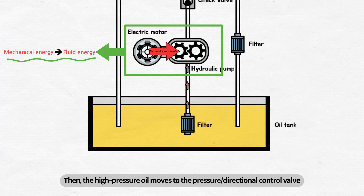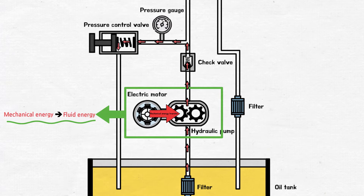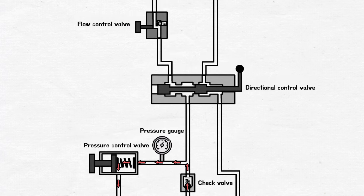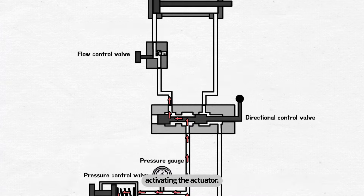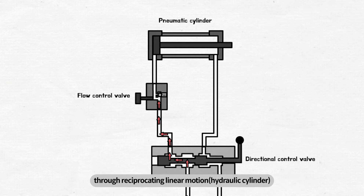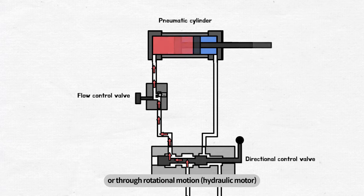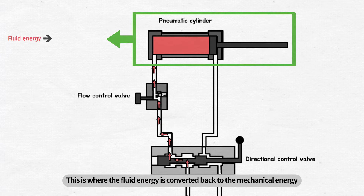Then, the high-pressure oil moves to the pressure directional control valve to control pressure and direction. The pressurized oil controlled this way flows through the flow control valve into the actuator, activating the actuator. Various tasks will be performed depending on the functions of the actuator through reciprocating linear motion (hydraulic cylinder) or through rotational motion (hydraulic motor). This is where the fluid energy is converted back to mechanical energy.